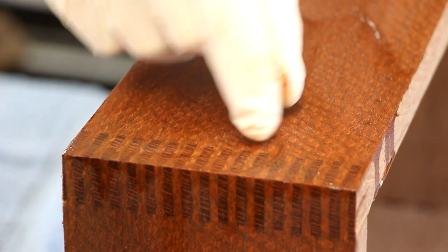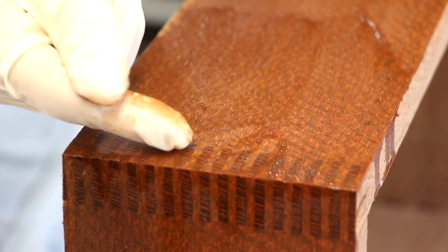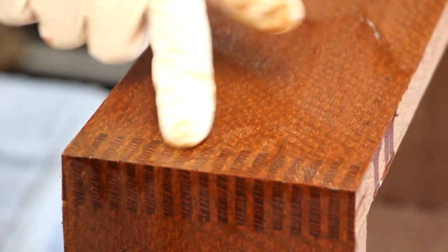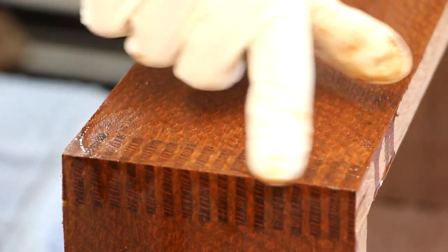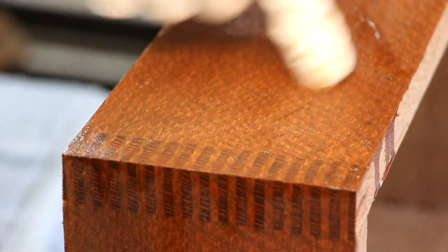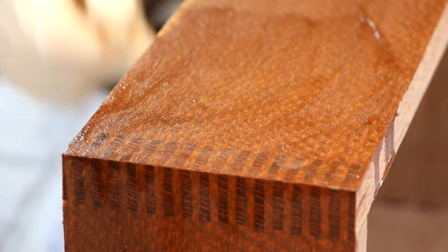So basically what we're doing is creating a slurry of sawdust and the polyurethane, which as we sand it, goes down into the pores and cracks. And when it dries, it's going to seal it all up and be nice and hard. And you can continue on with your normal finishing.